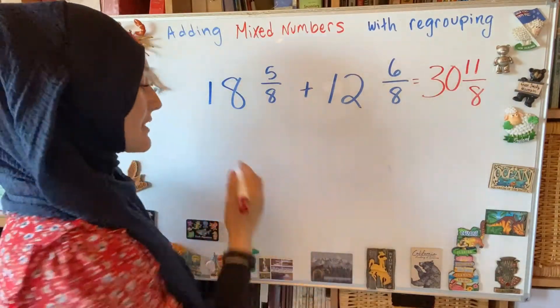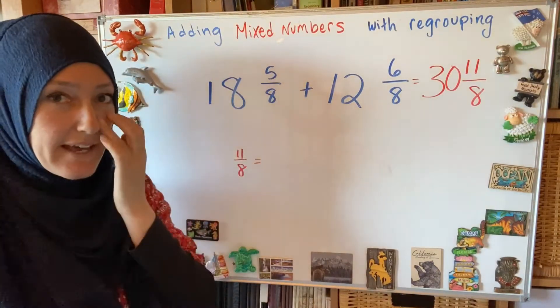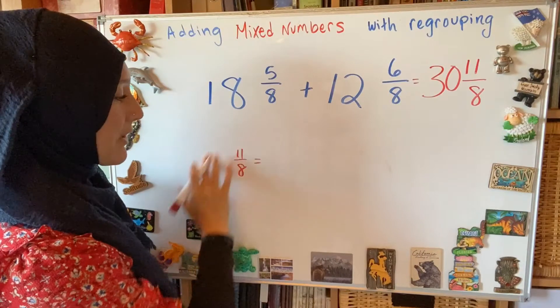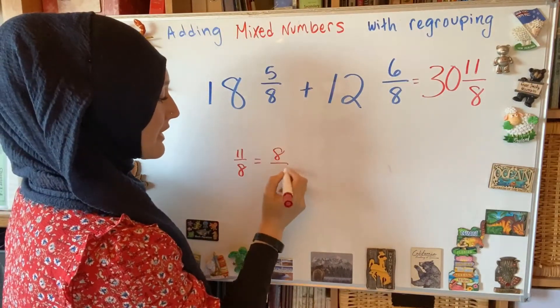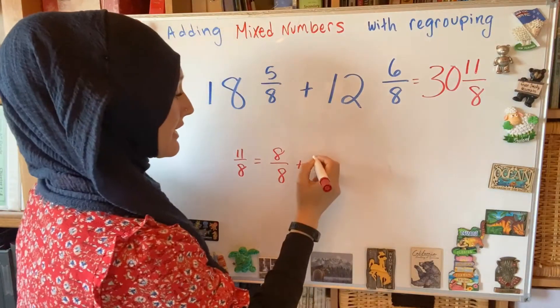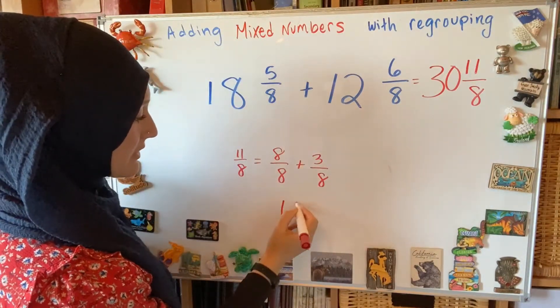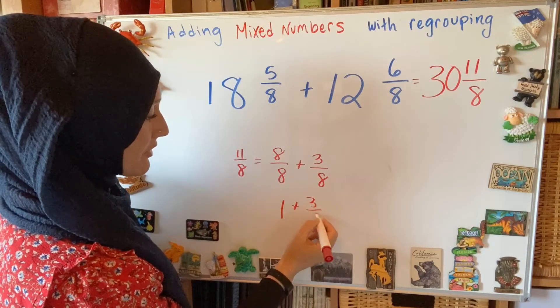So that 11 eighths, let me pull that aside over here. 11 eighths, I need to represent that as a mixed number. So I think, okay, well, how many wholes are in here? There's 8 eighths plus 3 eighths. So here's my one whole and my leftover 3 eighths.